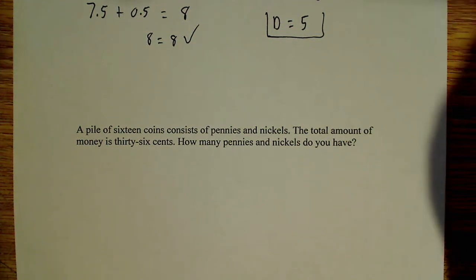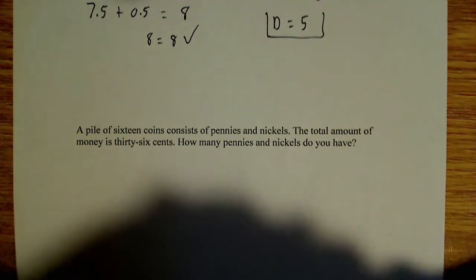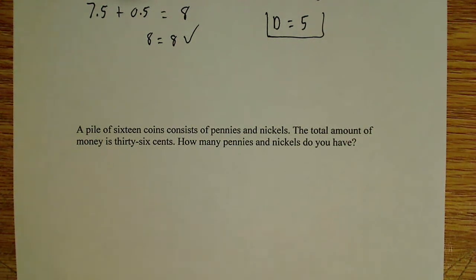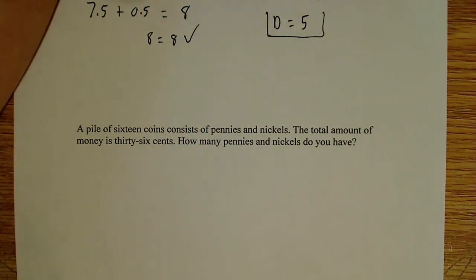Alright, so I've got another problem here. It says a pile of 16 coins consists of pennies and nickels. The total amount of money is 36 cents. How many pennies and nickels do we have? So we have a pile of money here. It consists of pennies and nickels, and the total amount of money is 36 cents.